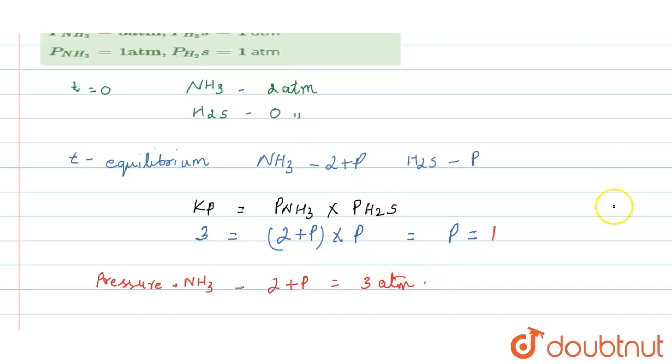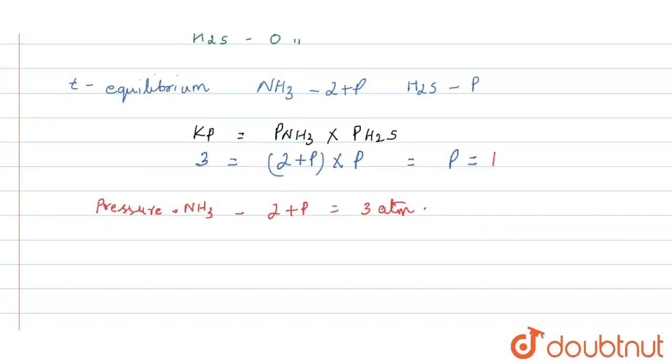Now for the pressure of H2S, it is P, which is 1 atmosphere. So this is the answer.